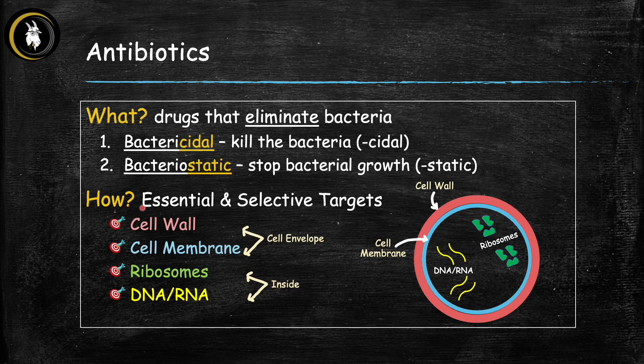The next question is: how do antibiotics do this? They have to select targets on the bacteria that are both essential for the bacteria to survive and also selective — present on bacterial cells but not so present on our cells, so they don't harm our own cells. There are four good targets: bacterial cell wall, bacterial cell membrane, bacterial ribosomes, and bacterial DNA/RNA. Based on these targets, we come up with our different classes of antibiotics.